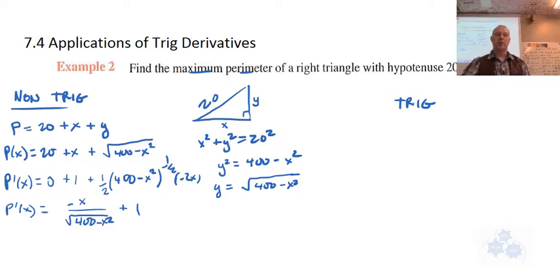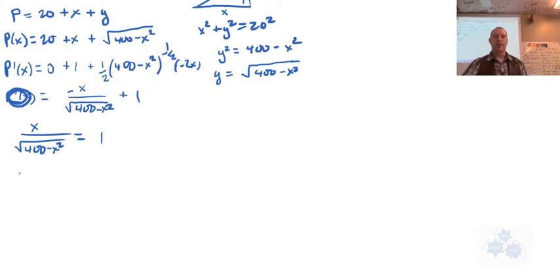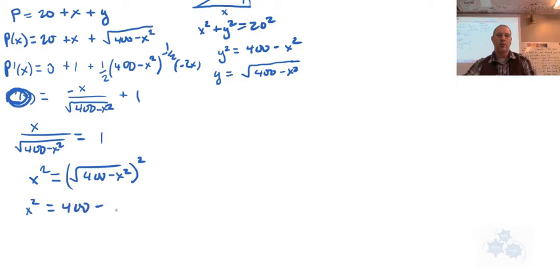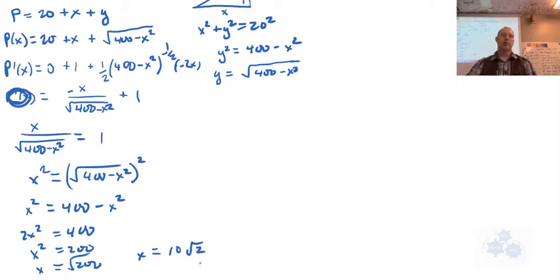If we want to find the critical number, we let that equal 0. Taking the negative term to the other side, we've got x/√(400 - x²) = 1. Multiply both sides by √(400 - x²). Square both sides: x² = 400 - x², so 2x² = 400, x² = 200, and x equals √200 or 10√2. We'll leave this in radical form so it's more exact, no decimals.